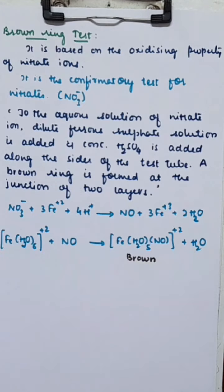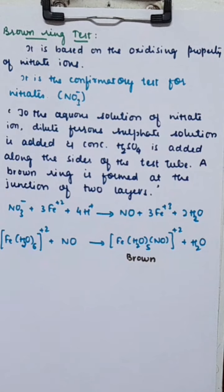A very important reaction is the brown ring test. This is the confirmatory test for nitrate ions. The familiar brown ring test for nitrates is based on the oxidizing property of nitrate ions.